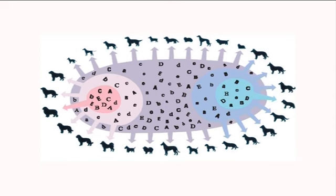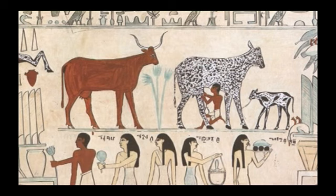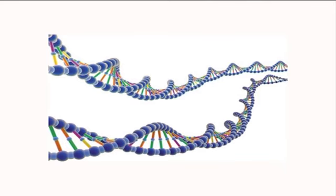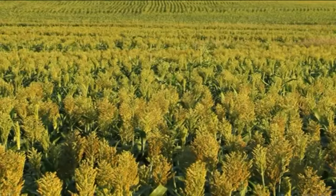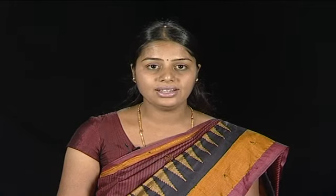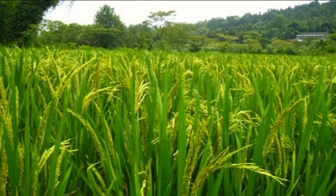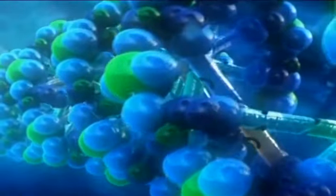Gene pool centers are the places of origin of plants and animals for the first time — the regions where large-scale domestication occurred for particular species. The gene pool is defined as the stock of genes found in an interbreeding population. Gene pool centers refer to areas on the earth seen as places where important crop plants and domestic animals originated. They have an extraordinary range of wild equivalents of cultivated plant species and useful tropical plants.